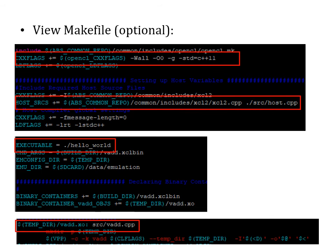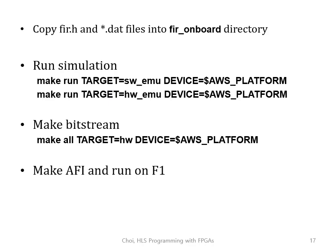To make further customization, read the makefile where you can change compile flags, host file name, executable name, or kernel files being synthesized. When you're finished modifying the makefile, host file, and kernel file, copy the fir.h header file and all data files into the new directory. Then run simulations to verify correctness — first software emulation, then hardware emulation. If both pass, you can make the bitstream, make the AFI, and run on F1, same as the Hello World example.